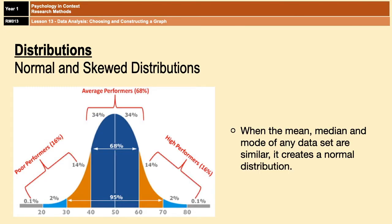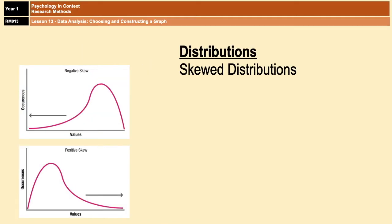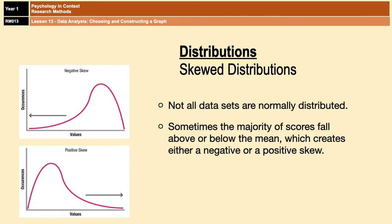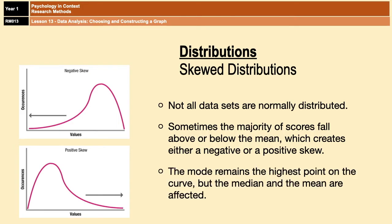But those are extreme scores. However, sometimes data does not follow this symmetrical pattern, and there are times when large proportions of scores fall below or above the mean, and that results in either a positively or a negatively skewed distribution.